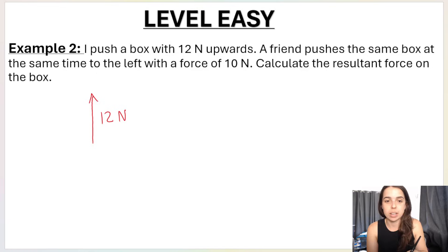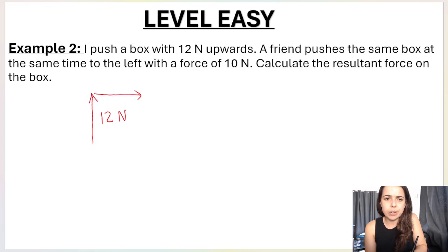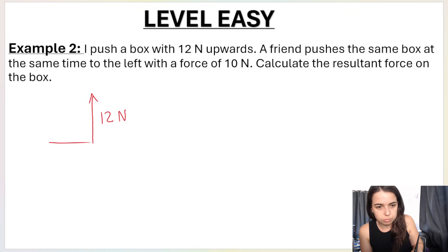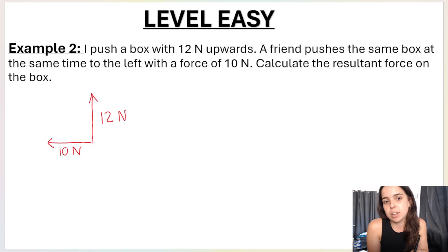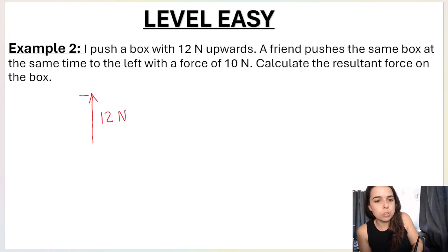Be careful how you draw this vector. Drawing it pointing to the right is wrong — it must go to the left. Also, vectors cannot be tail-to-tail; they must be head-to-tail. So you draw the 10-newton vector at the head of the 12-newton vector, going to the left.